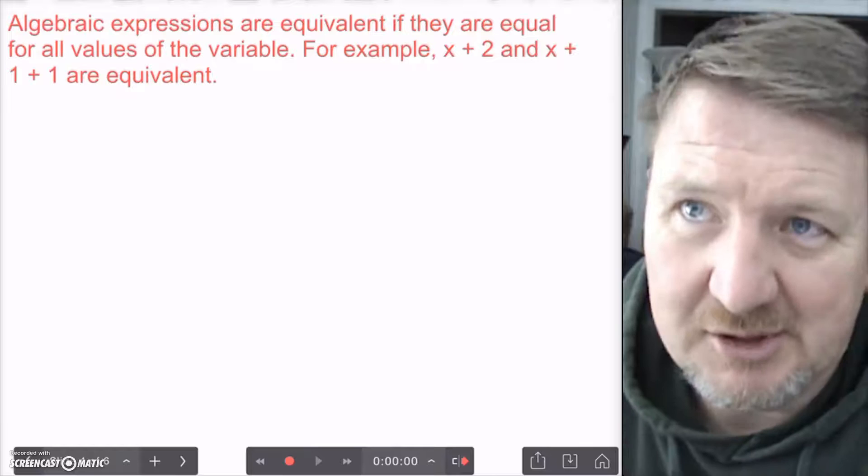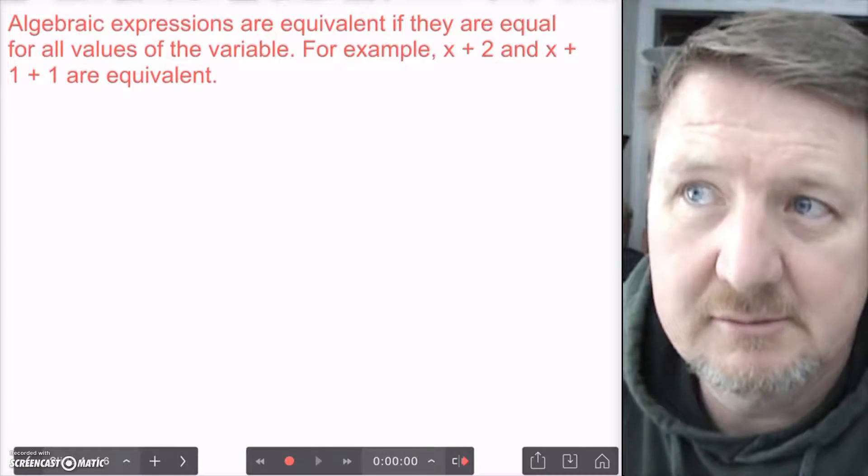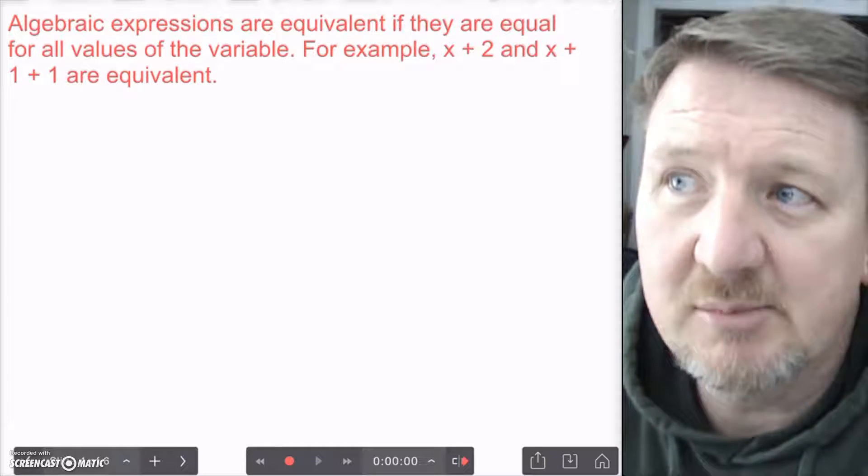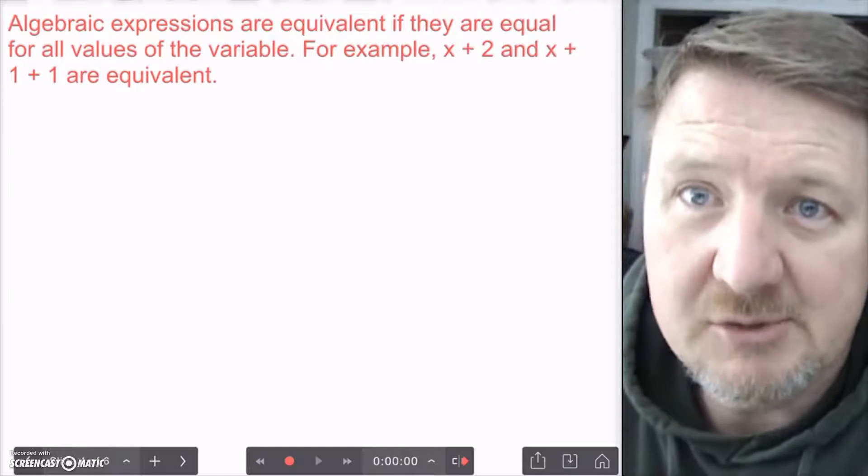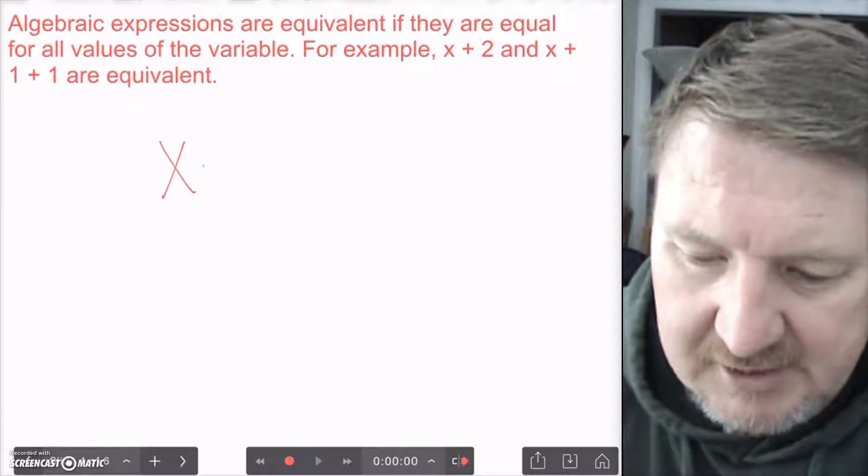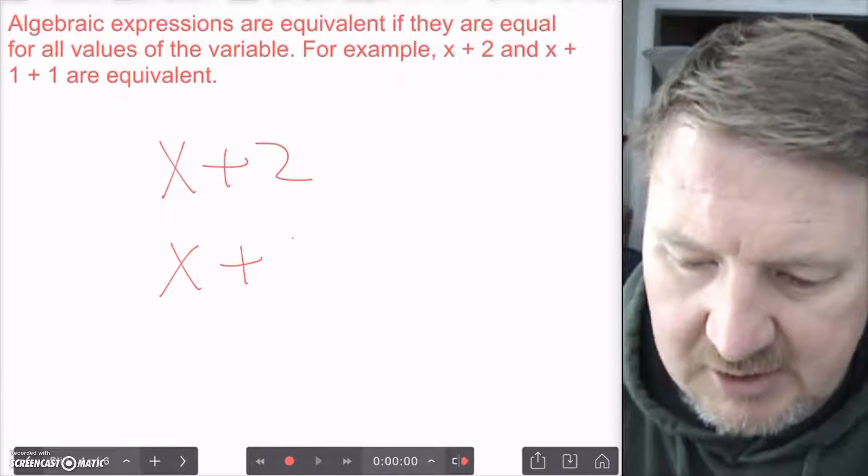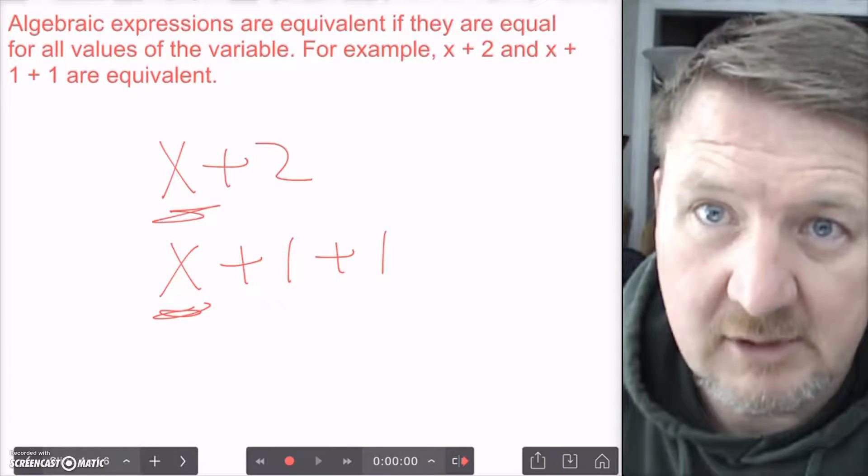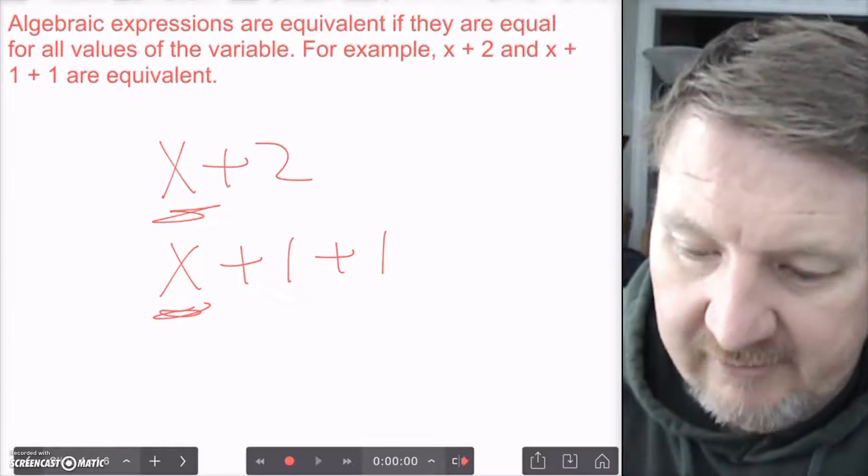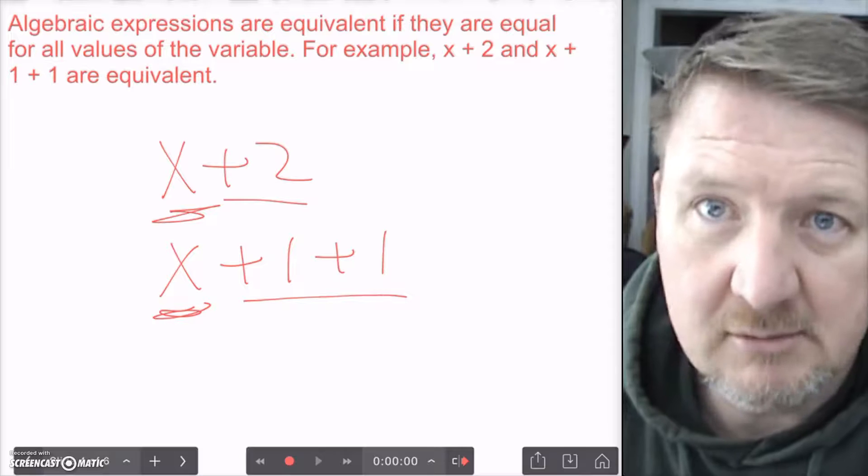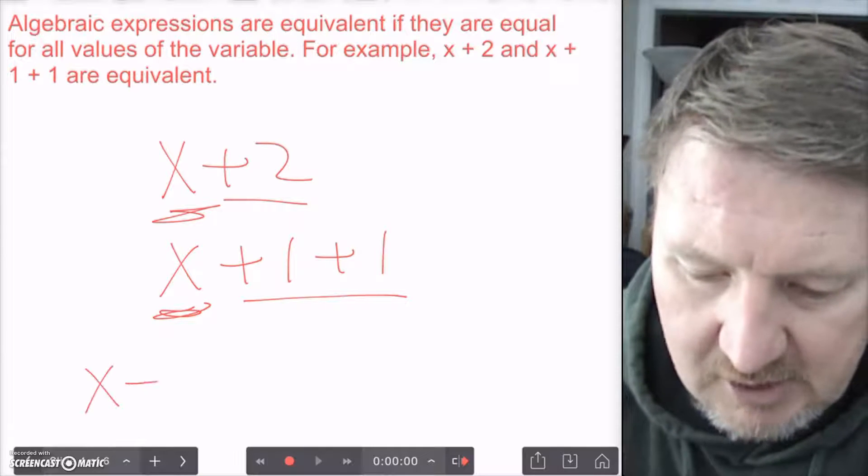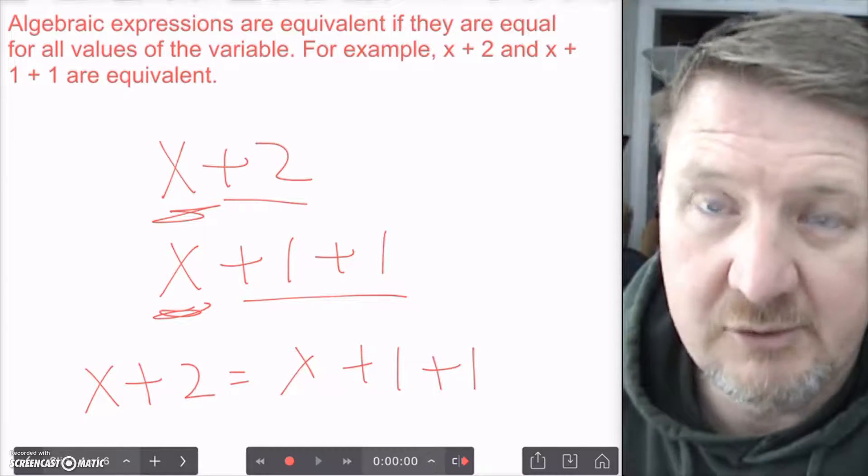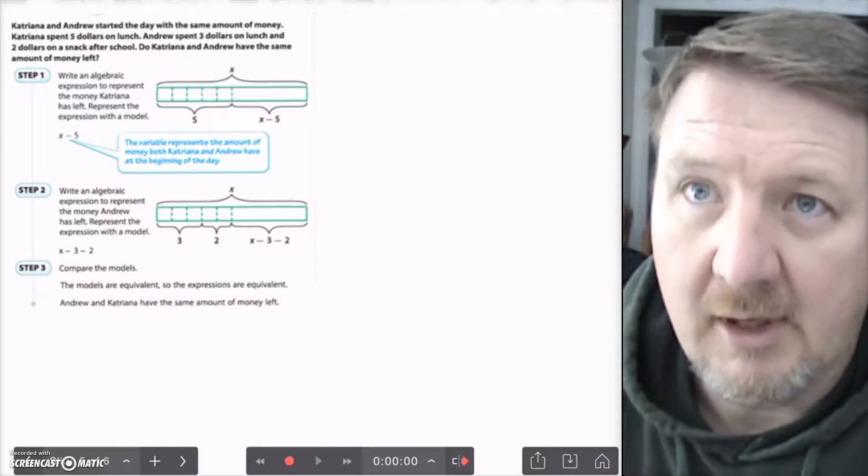So, here it says that algebraic expressions are equivalent. That means they're equal if they are equal for all values of the variable. For example, x plus 2 and x plus 1 plus 1 are equivalent. Because if I got x plus 2, and I have x plus 1 plus 1, my x values are the same. And then if I add 2 to it, it's the same as if I add 1 twice to it. So, those are equal. I can say x plus 2 equals x plus 1 plus 1. Those two values are the same.